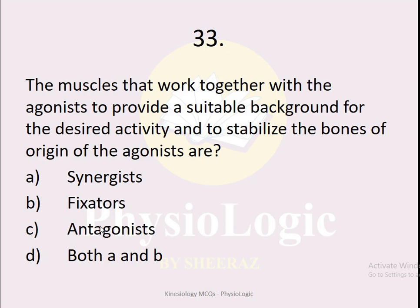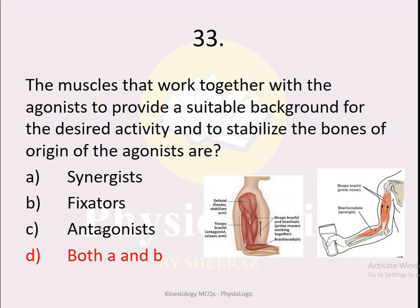MCQ number 33 (renumbered): The muscles that work together with the agonist to provide a suitable background for the desired activity and to stabilize the bones of origin of the agonist are — option A synergist, option B fixators, option C antagonist, option D both A and B. The correct option is option D, both A and B. The first part of the definition describes synergists; stabilizing the bones of origin of the agonist describes fixators. Together, both are correct.